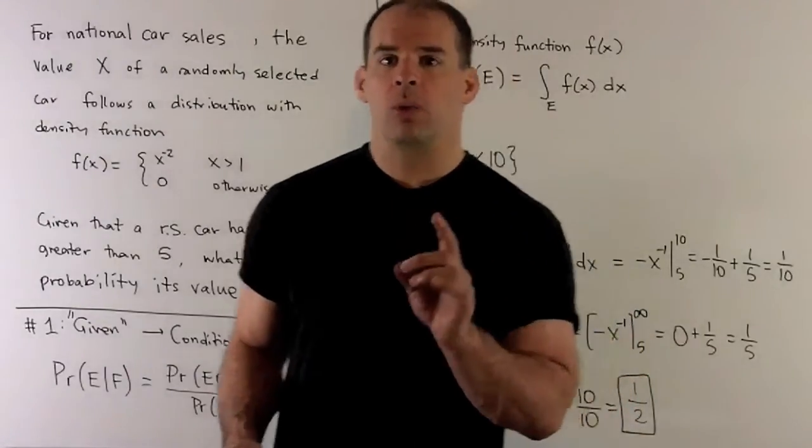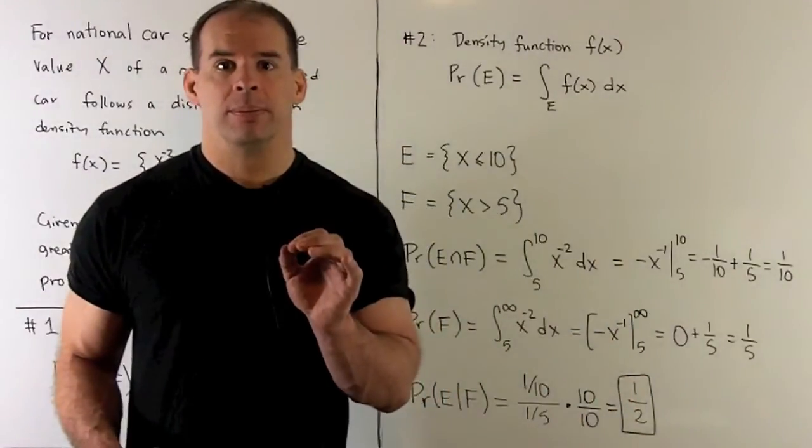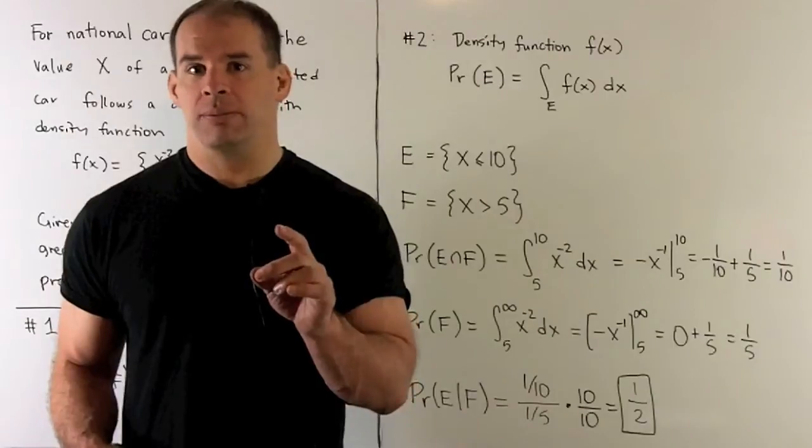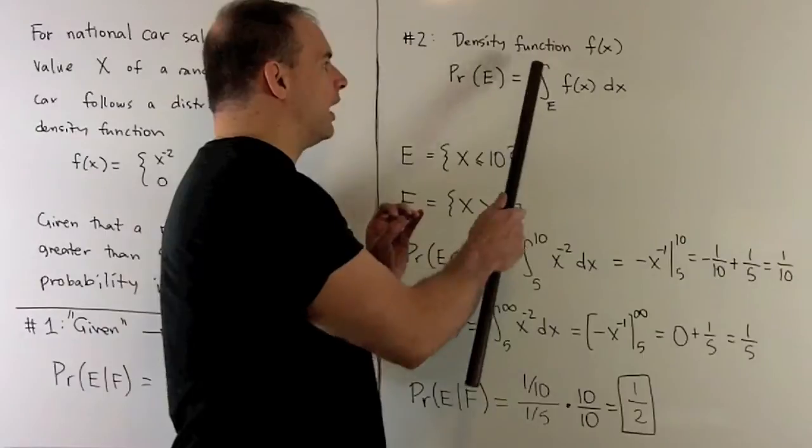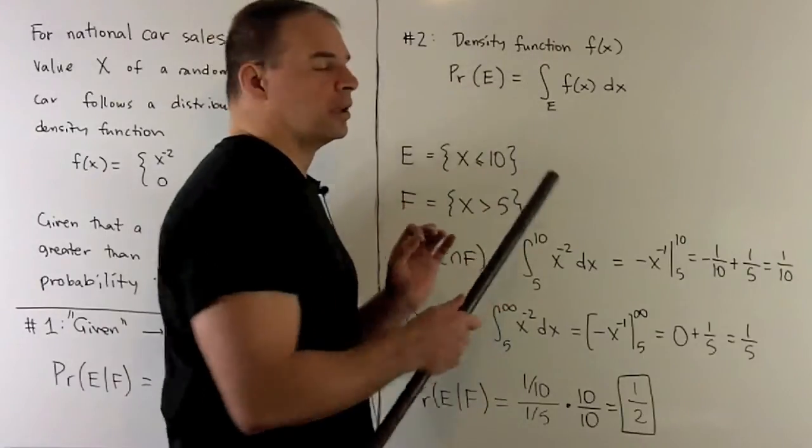Now, we also have to work with the density function. So we have a density function, the probability of an event E, we take our density function and then we integrate over our event.